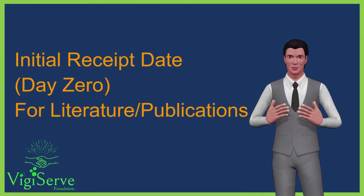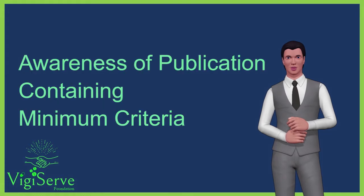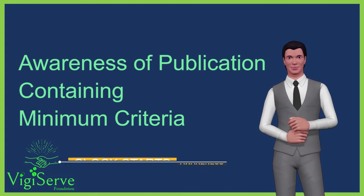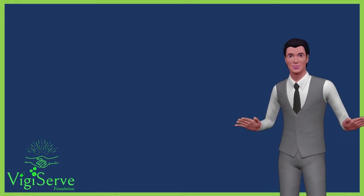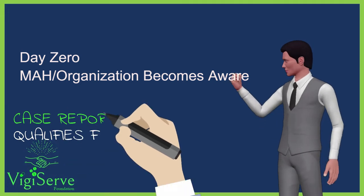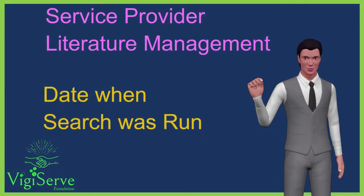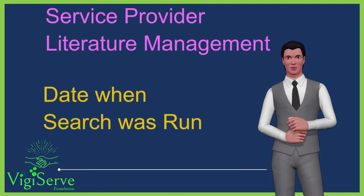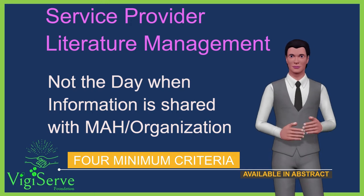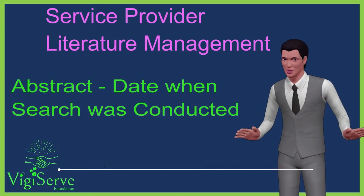We will now discuss about the initial receipt date in case of medical literature or publications. For case reports identified in the medical literature, the clock starts with awareness of a publication containing the minimum criteria. Day zero is the date on which an organization becomes aware of a publication containing the minimum information for an ICSR to qualify for submission. In case of a service provider, the day zero is the date the search was run if the minimum criteria are available in the abstract — it is not necessarily the date the information was supplied to the organization. Day zero for the submission of an adverse reaction present in an abstract is taken to be the date on which the search was conducted.